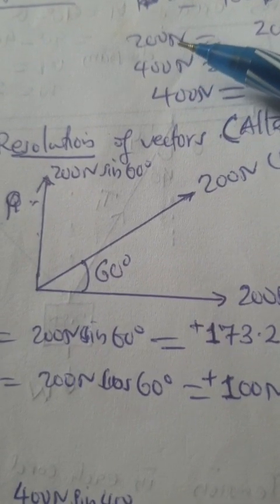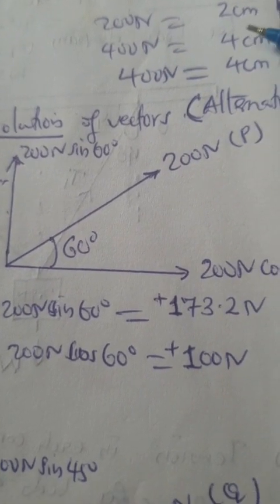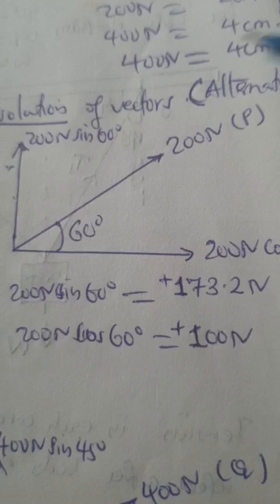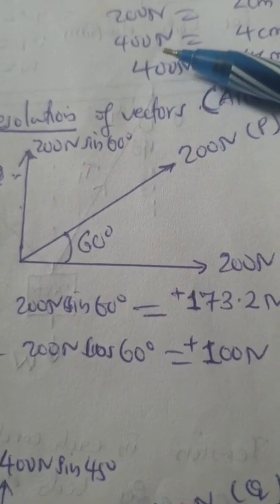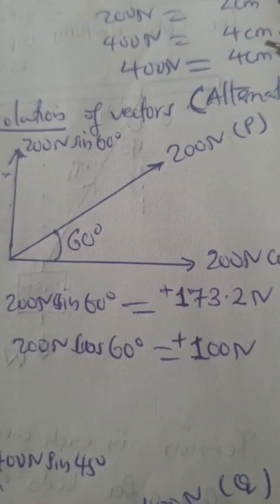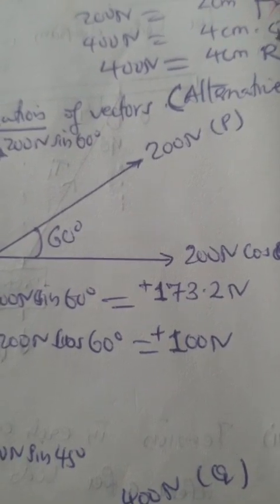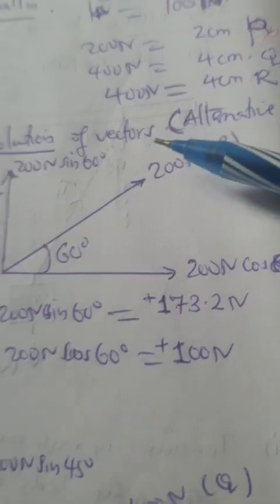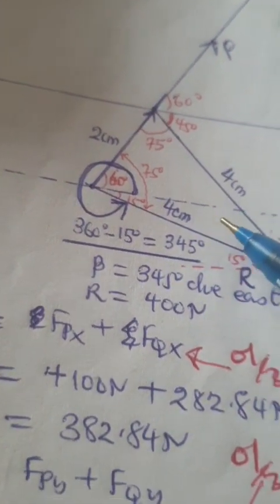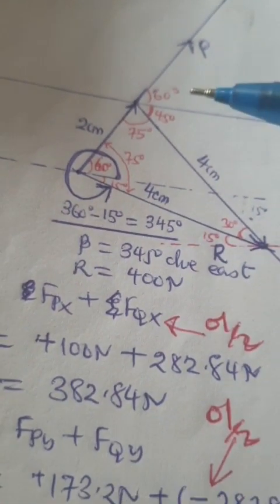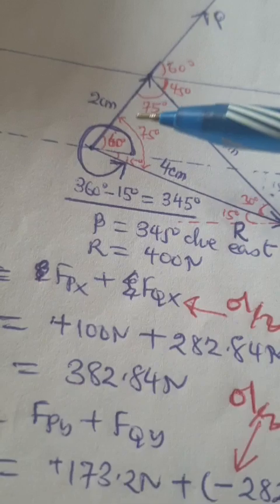For 200 newtons, we represent 2 centimeters for vector P. And for 400 newtons, we represent 4 centimeters for vector Q. Then we draw these questions as you see below.